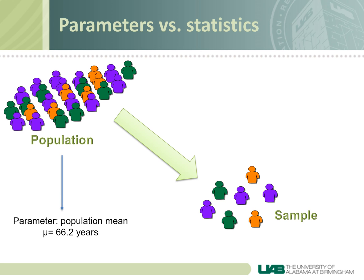A statistic, on the other hand, is a value that describes some characteristics of the sample, and Latin letters, or the standard alphabet used in the U.S., are used to represent statistics. For example, let's say we sampled the Republican members of the Senate and calculated their mean age. We would report the sample mean here as X-bar, which is the standard symbol for a sample mean, as 48.73 years.